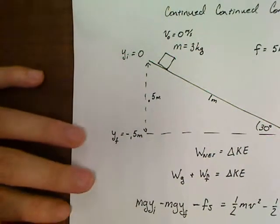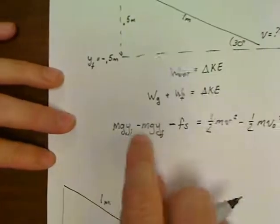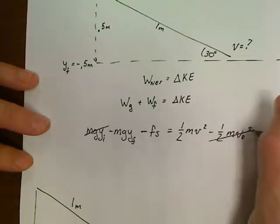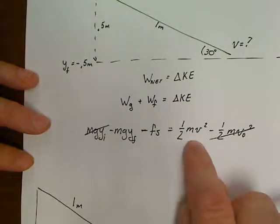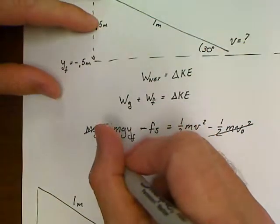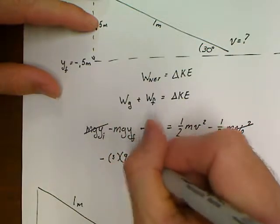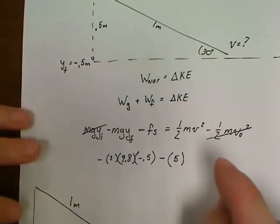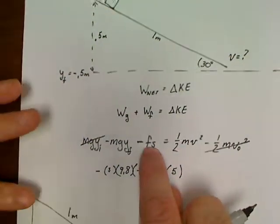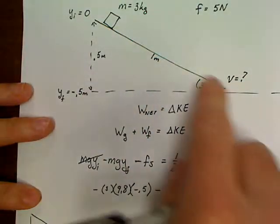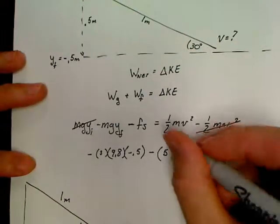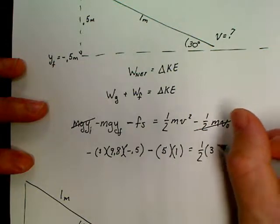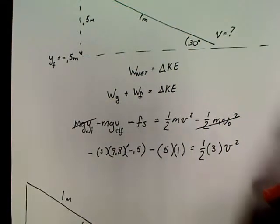Looking at our equation again — mg·y_initial cancels out and the one-half mv₀² cancels out since the initial velocity is zero. Plugging in numbers: negative mass three times 9.8 times negative 0.5, minus five times one meter (since friction is applied over the entire one meter of ramp), equals one-half times three times v².